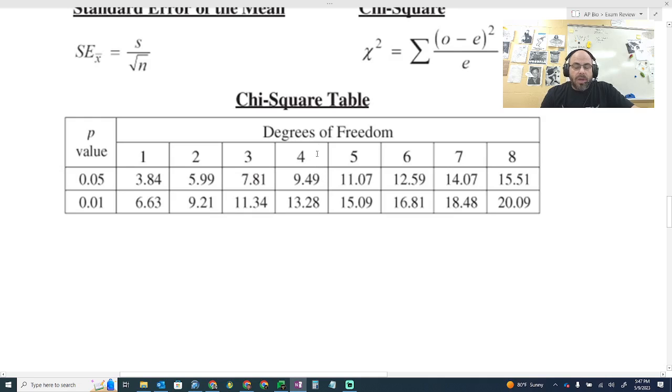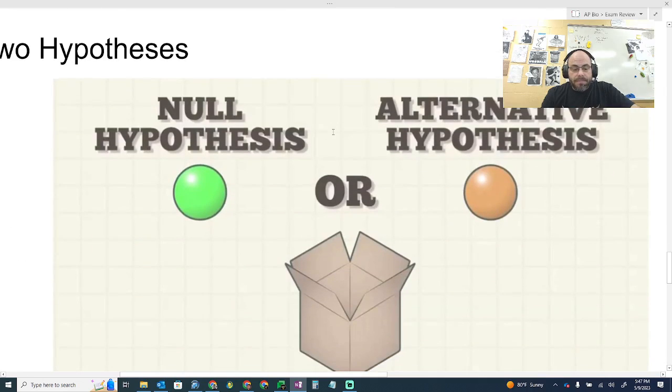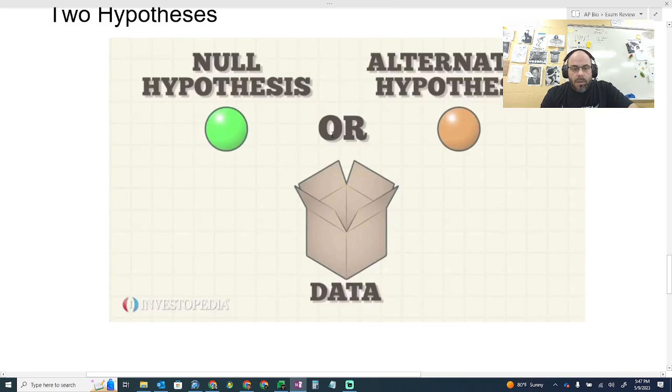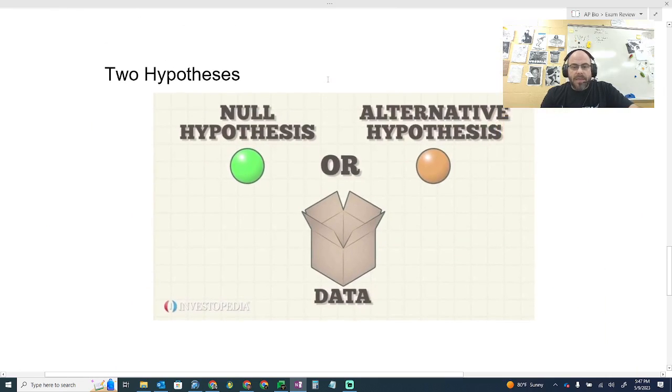And so if my chi-square is under that, then I'm going to accept the null hypothesis. If it's over that, I'm going to reject the null. Let's talk about that.